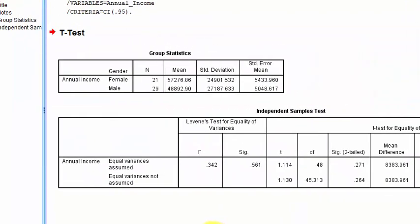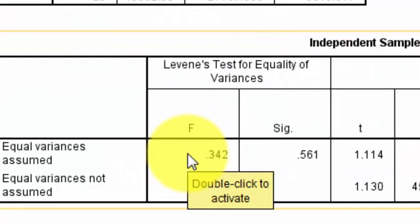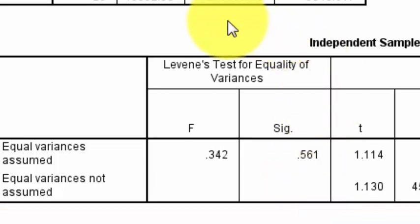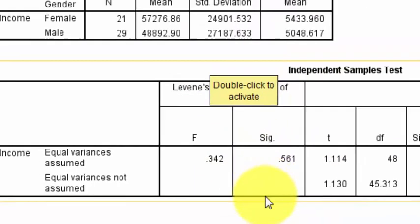Even though that wasn't the question, this first part tells us that the data did not violate the homogeneity of variance rule. This is Levene's test for homogeneity of variance.